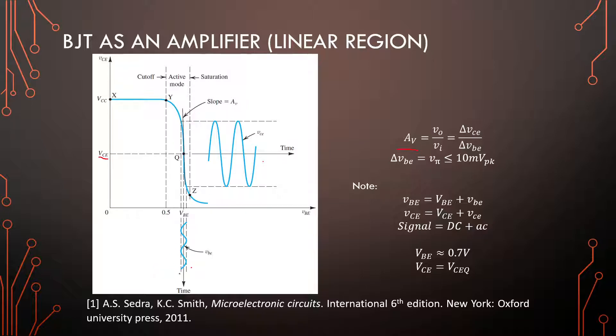Now, the textbook, and you guys are using, if you're just a viewer, from now on the change in VBE will be called V_pi in our model. And this value should always be less than 10 millivolts peak. So the value of V_pi should always be very small. Hence, we call this the small signal model.